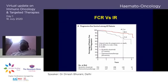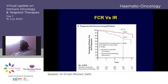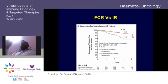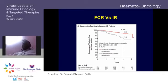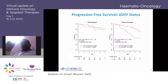The data that has changed preferences is ibrutinib plus rituximab versus FCR. At three years, progression-free survival is significantly better with ibrutinib-rituximab, and there is even an overall survival benefit, despite lower CR rates and lower MRD negativity compared to FCR.